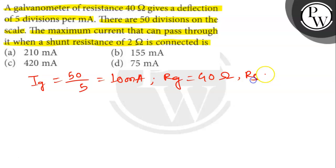Rs equals 2 Ohm. We have to find out the maximum current.